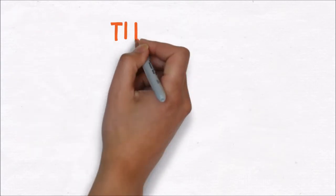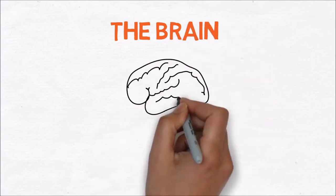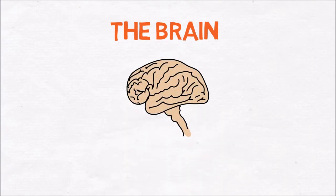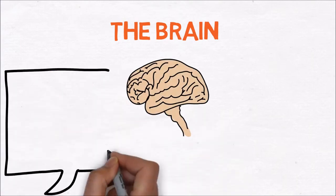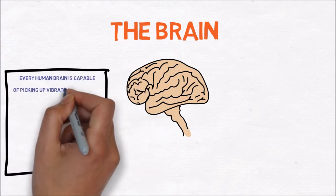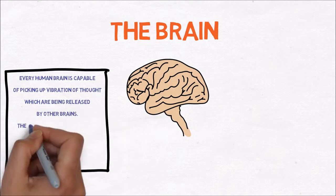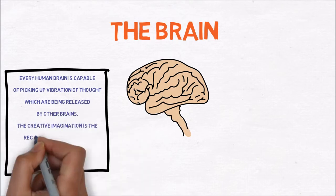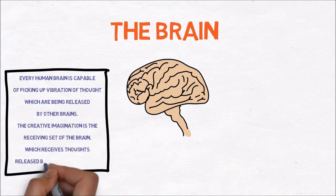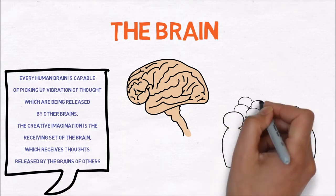The twelfth step is about the brain. Regarding Hill, every human brain is capable of picking up vibrations of thoughts which are being released by other brains. The creative imagination is a receiving set of the brain which receives thoughts released by the brains of others. Together with the mastermind principle, you can use the members of the mastermind group to create amazing ideas or solve big problems.